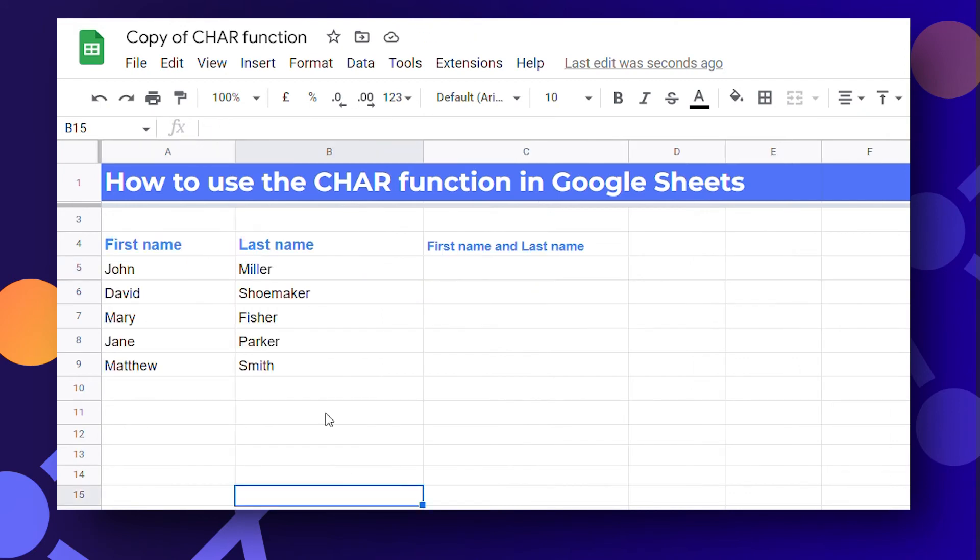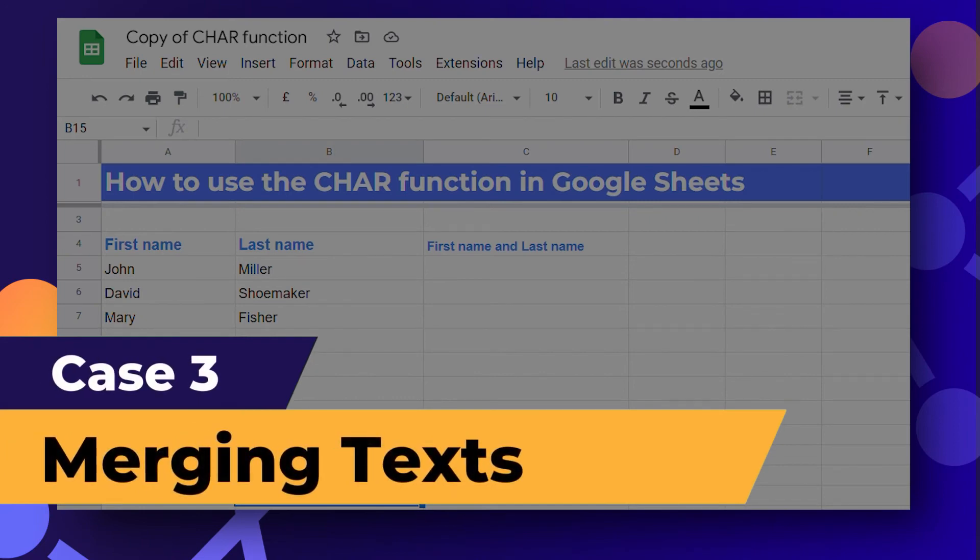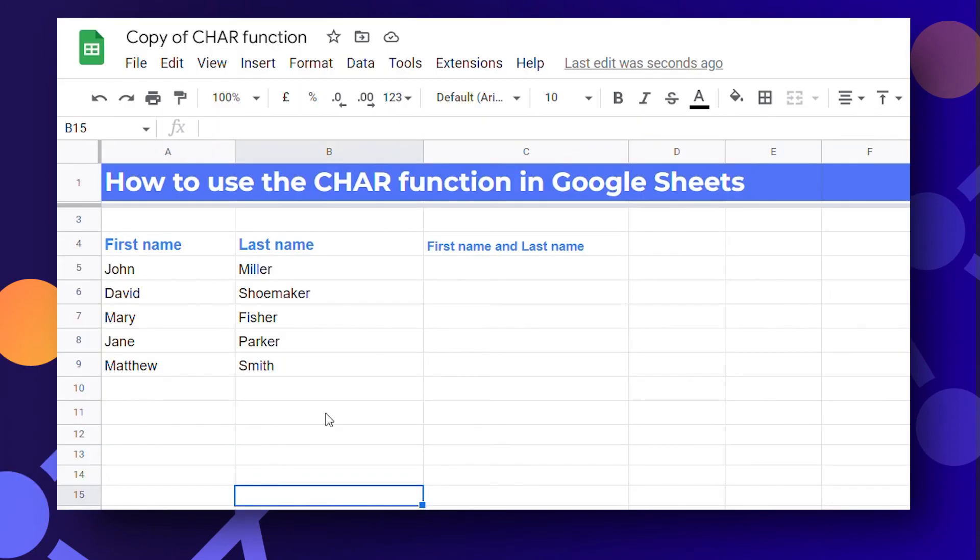One more interesting thing you can do is you can concatenate text in two cells. The char function can be used to concatenate and merge the names in one cell. Assume that you have a list of employees with their first name and last name in different rows.